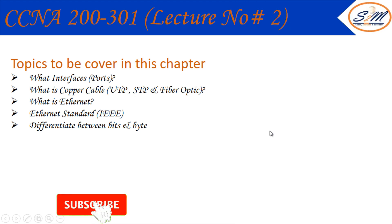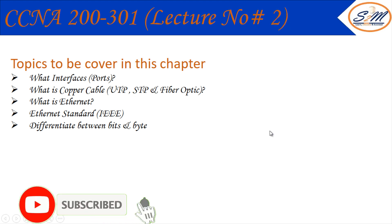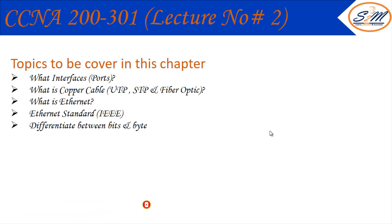Hello everyone, welcome to lecture number two from the course CCNA 200-301. Today's lecture will cover the following topics: what is interface, what's the difference between UTP, STP, and fiber optic cables, what is Ethernet, what are IEEE standards, and what's the difference between bits and bytes. These are the major topics we will cover in this chapter.